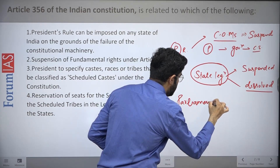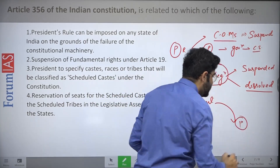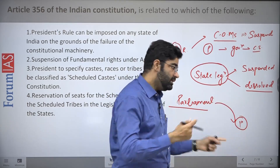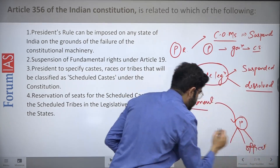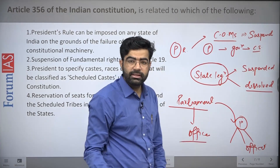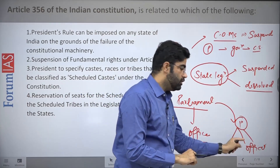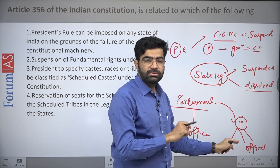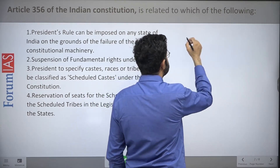When the state legislature is suspended or dissolved, it is the Parliament — not the President directly — which has the authority to make laws for the state. Parliament generally delegates this power to the President. The President can further delegate this responsibility to any other officer. This is very important and has been asked in UPSC — it is Parliament which decides who can make laws in state matters.